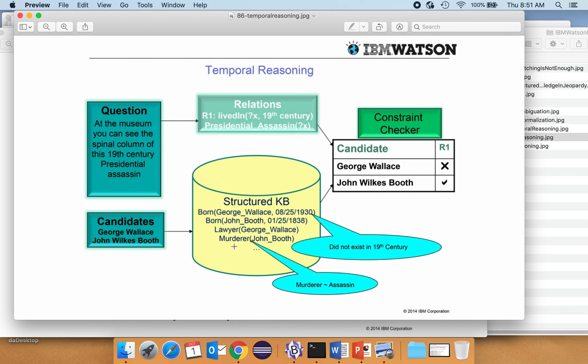Okay. Here's statistical paraphrasing, murderer, assassin, same thing. So here we have somebody who was born in 1838. So yes, that matches up with the 19th century. So some additional constraint, temporal reasoning.